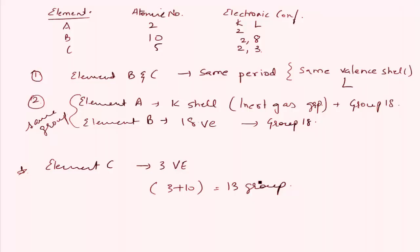Now we can predict the positions of these elements just from their atomic numbers and electronic configurations. Atomic number 2 is helium — an inert gas. Atomic number 10 is neon, element B, also an inert gas in group 18. Atomic number 5 is boron, element C, which belongs to group 13.